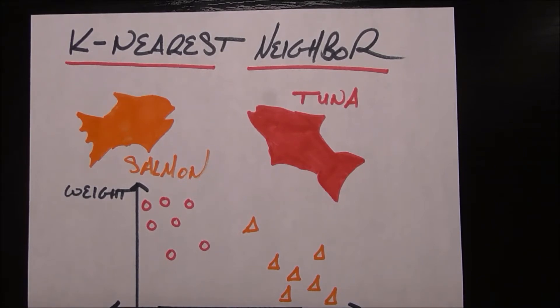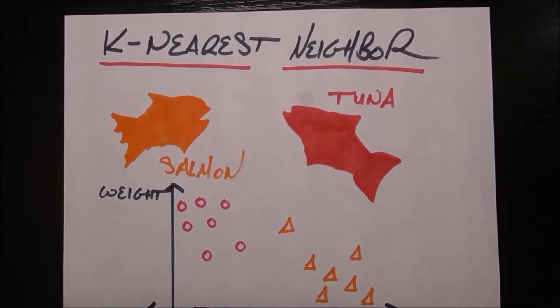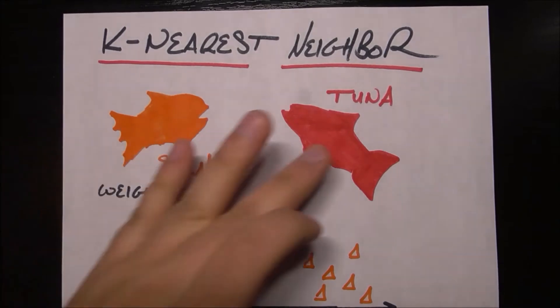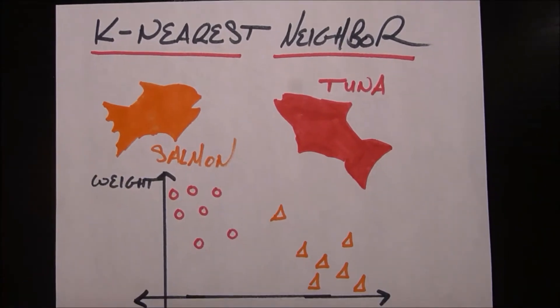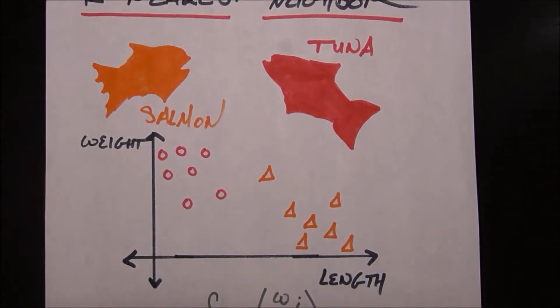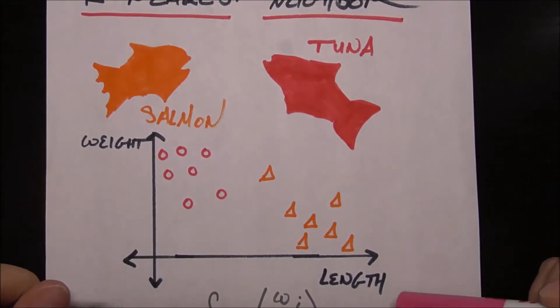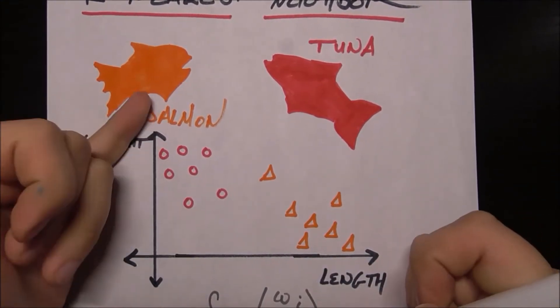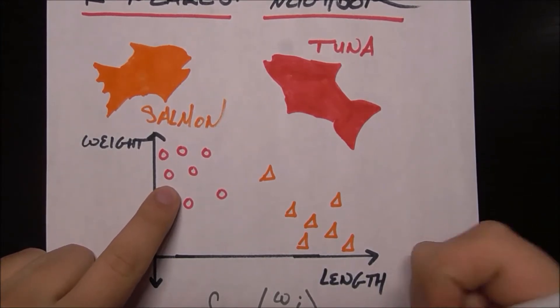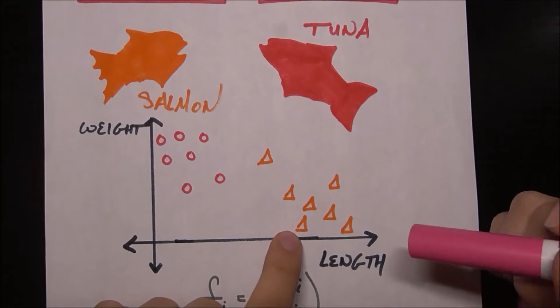We'll be using the same example as we have in several of our other machine learning videos about trying to classify a mystery fish as a salmon or a tuna based on some properties about it. Here we'll be using the properties of weight and length. On this grid you see that I have length on the x-axis and weight on the y-axis, and I have these red circles representing tunas and these orange triangles representing salmon.